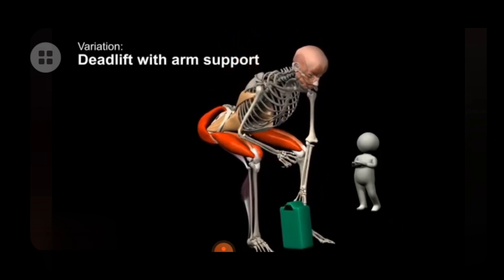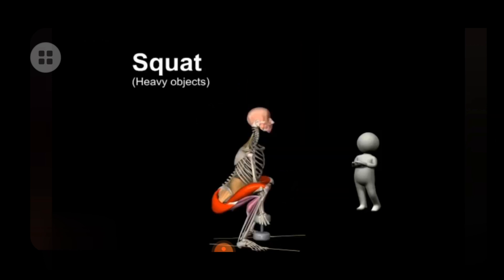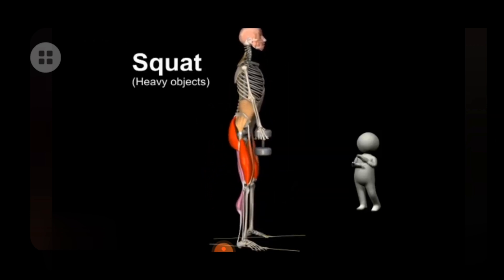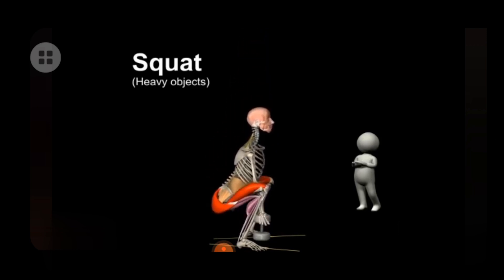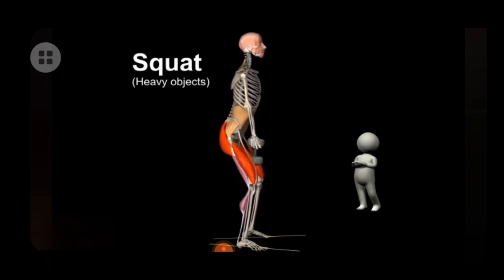Variation: deadlift with arm support. Another option for lifting heavy objects is the squat. Here too, we must make sure to keep the weight near the body and keep the back straight.